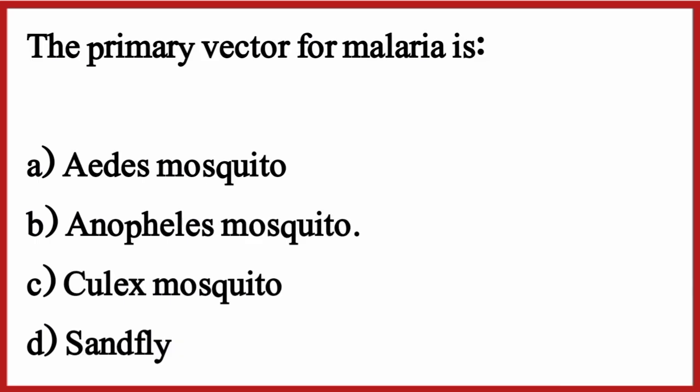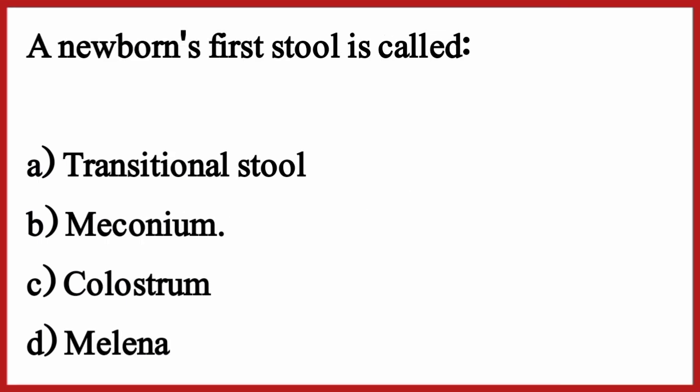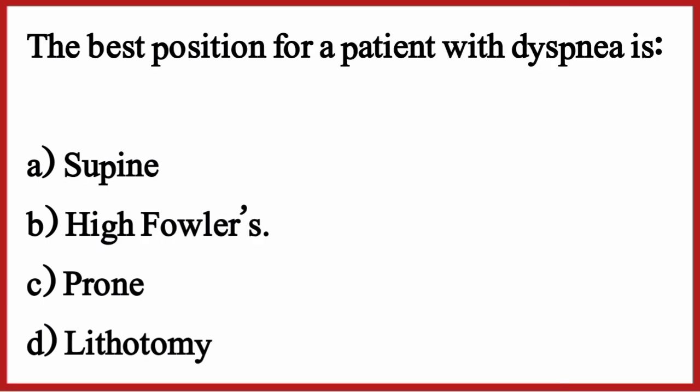The primary vector for malaria is — the correct option is option B: Anopheles mosquito. The first stool passed by a newborn is called — the correct option is option B: Meconium.